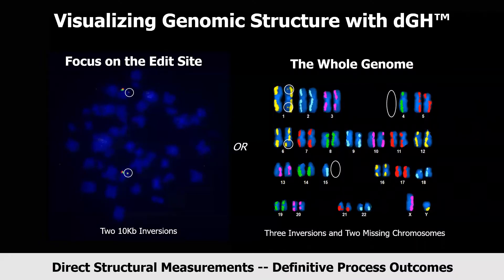At Chromatid, we focus on direct measurement of genomic structure using our Directional Genomic Hybridization, or DGH, platform. We work with many leading genome engineering companies to visualize genomic structural features from a few kilobases to the entire genome.